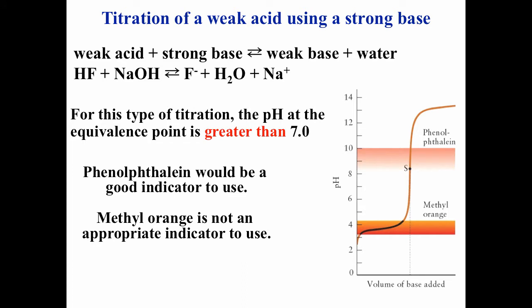For the titration of a weak acid with a strong base, say HF being titrated with sodium hydroxide, the equilibrium constant is large, so at the equivalence point you have mostly products: F⁻ and sodium ions. Sodium ions are neutral, but F⁻ is the conjugate base of a weak acid, so it's basic. The equivalence point is greater than pH 7, and phenolphthalein changes color in this region, so phenolphthalein would be a good choice of indicator for that titration.